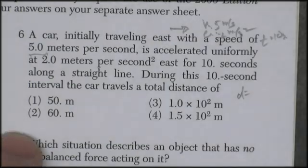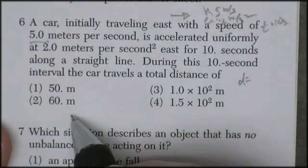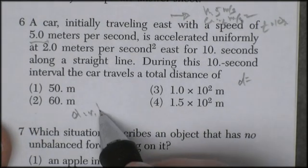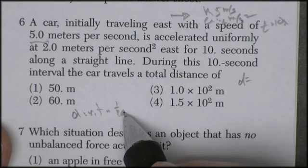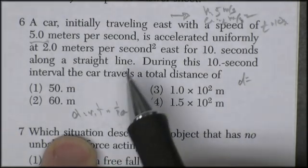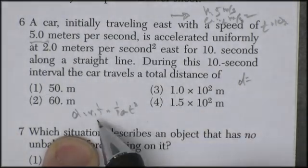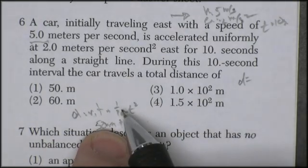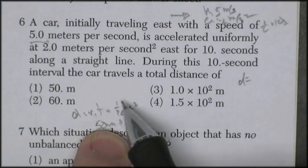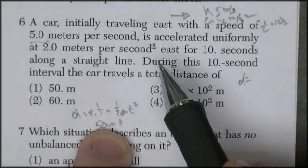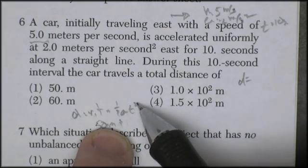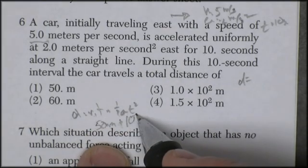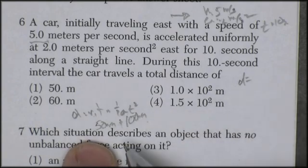Distance is equal to VIT plus 1/2 AT squared. So we could write the equation. Distance equals VIT plus 1/2 AT squared. All right, so let's see. The car is going 5 meters per second for 10 seconds for an initial distance of 50 meters, even without the acceleration. And we add to it 1/2 of AT squared. Well, A is 2. Half of 2 is 1. So it's going to be T squared, which is 100 meters in there. So we're going to go about 150 meters.